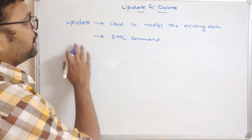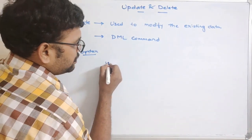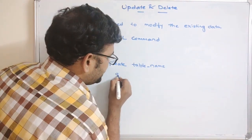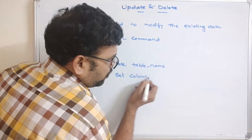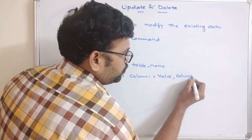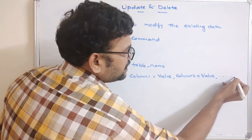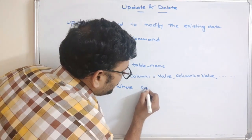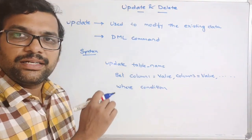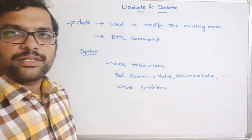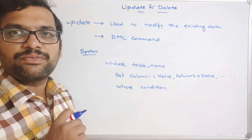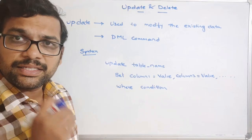The syntax for UPDATE is: UPDATE table_name SET column1 = new_value, column2 = new_value, etc. WHERE condition. First it checks the condition, and for all the resultant rows, the column value will be set — the existing value will be replaced with the new given value. This same syntax is used for updating either a single record or multiple records.